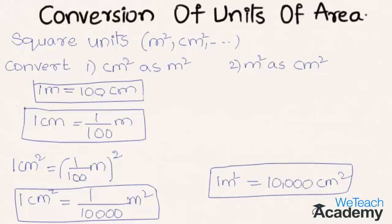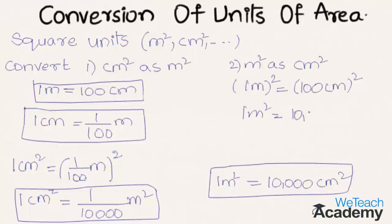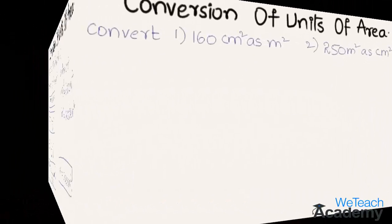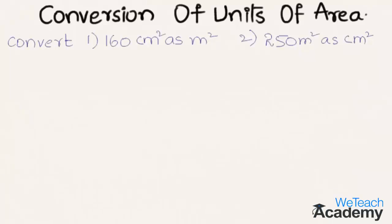Alternatively, we can convert meter square to centimeter square by squaring the base relationship: one meter square is equal to hundred centimeters whole square, which gives us one meter square is equal to ten thousand centimeters square. Now let us proceed and solve a few examples on this concept.